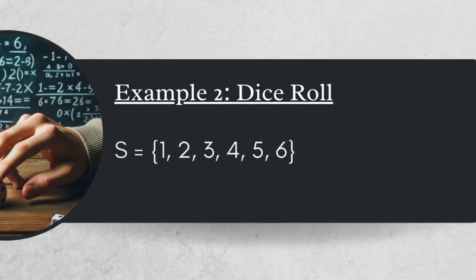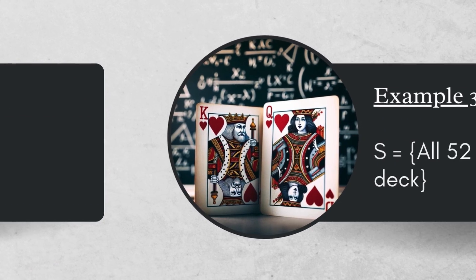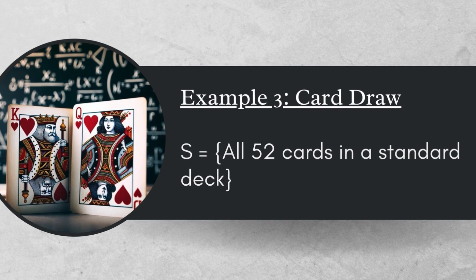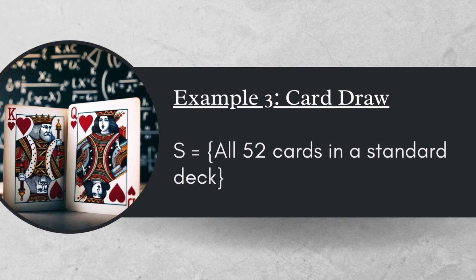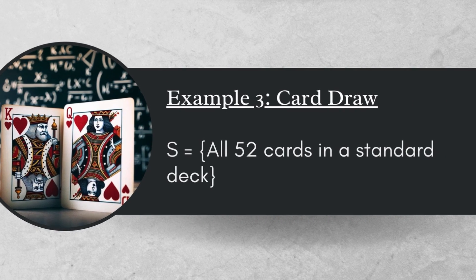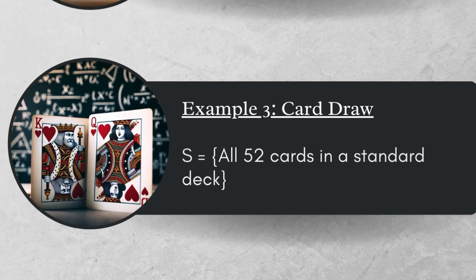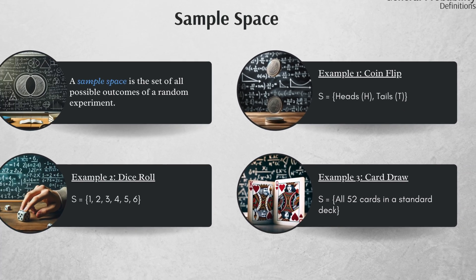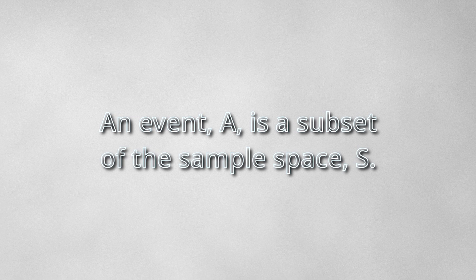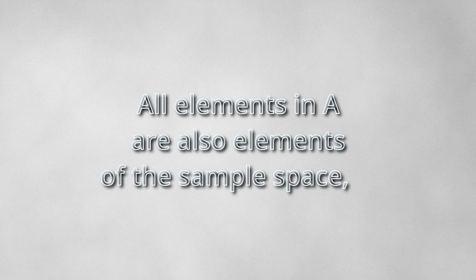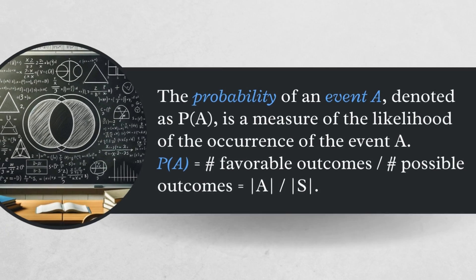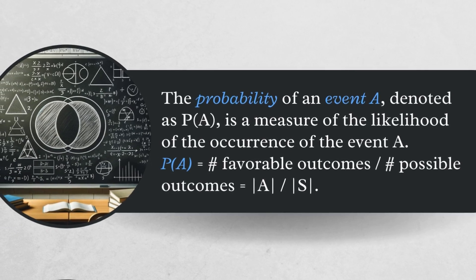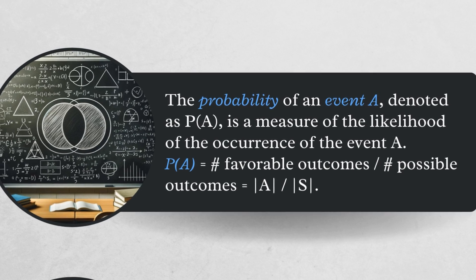In the last example, the experiment is drawing one card from a standard 52-card deck. The possible outcomes are the 52 cards of the deck, and so the sample space is all 52 cards in the deck. The reason we define a sample space is because now we can talk about events and probabilities. An event A is defined as a subset of the sample space, which basically means that all elements in A are also elements of the sample space.